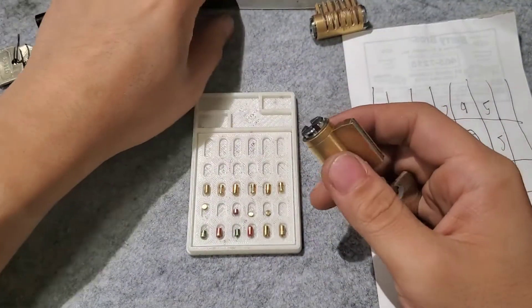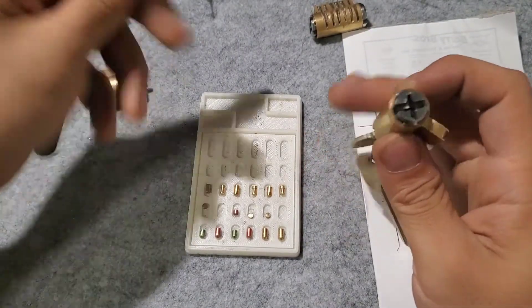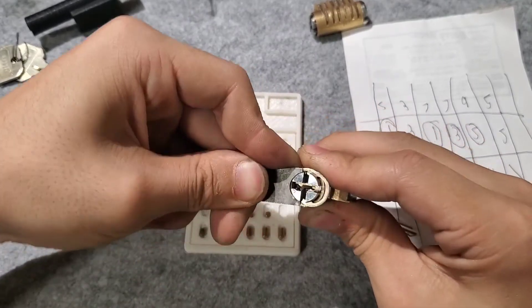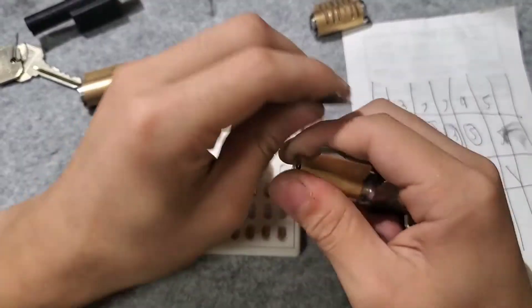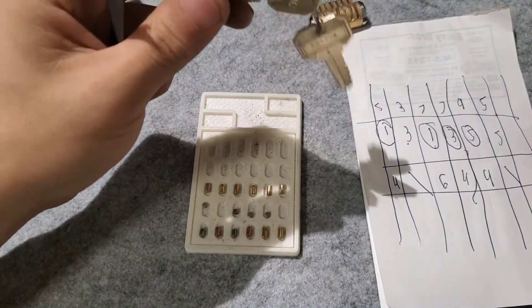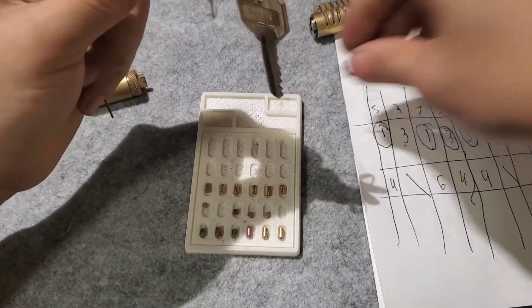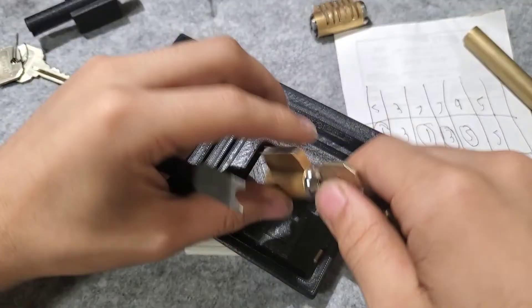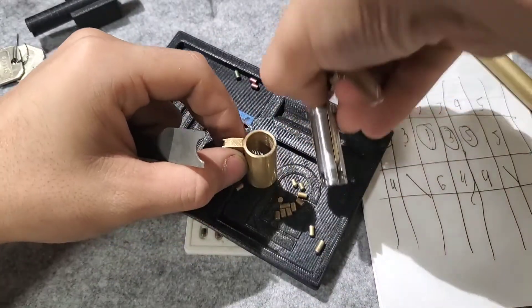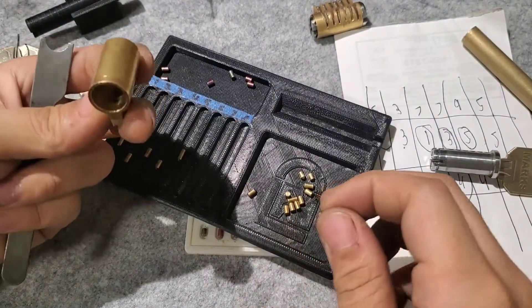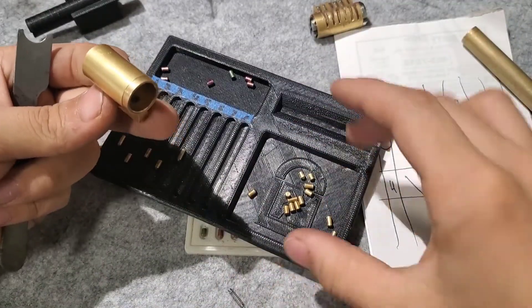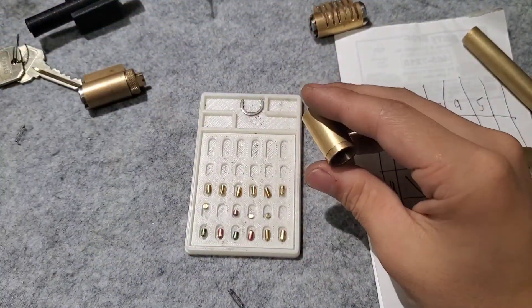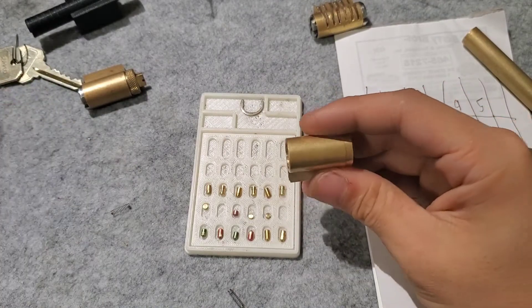First thing you're going to do is gut the lock, obviously, and we're not going to need anything out of here but the springs and the clip. Take that clip off. And for fun we're going to do a speed gut here, ready? Boom, boom, done. And you notice the springs for the most part stay in there, and the plug, except a few that fall out.